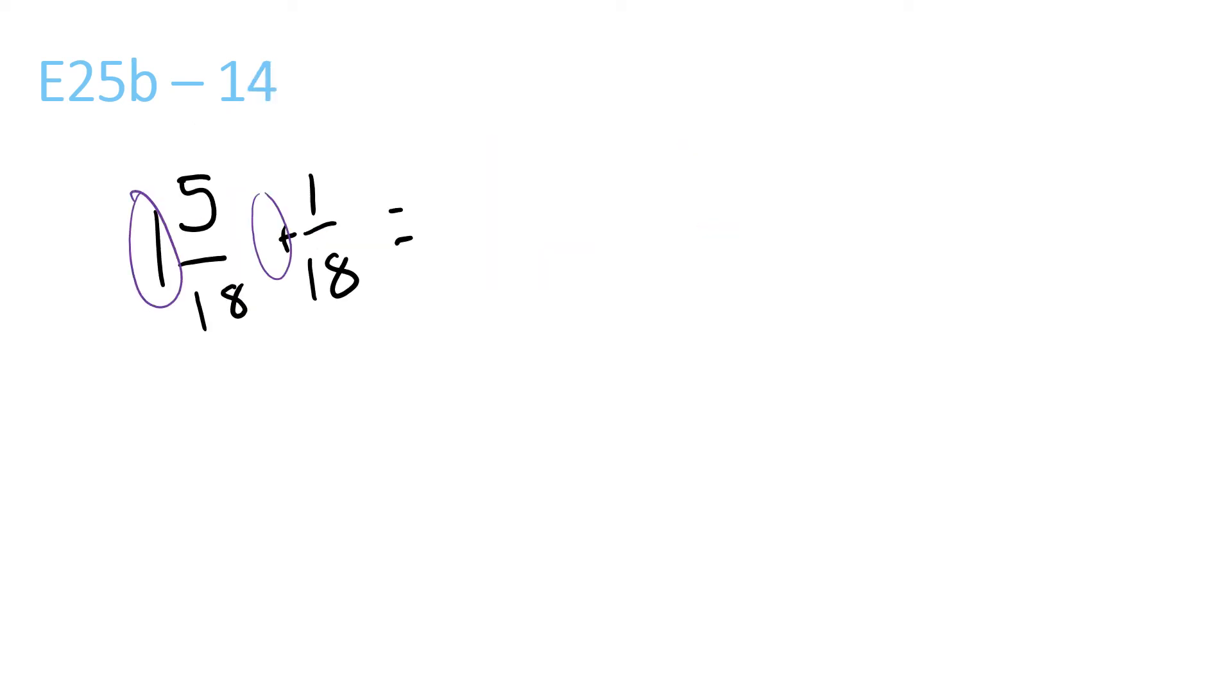1 plus nothing is 1. 5 plus 1 is 6 over 18, the bottom one stays the same. 6 and 18 are both divisible by a lot of numbers, but the biggest one is 6. So it equals 1 and 1 over 3.